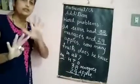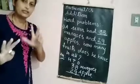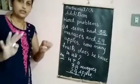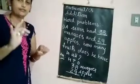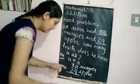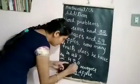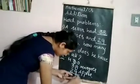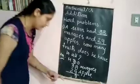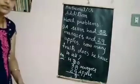Count forward from 8: 9, 10, 11, 12, 13, 14, 15, 16, 17. That gives 17 — 1 carry, 7. Write it here: 1 carry and 7 in the ones column.